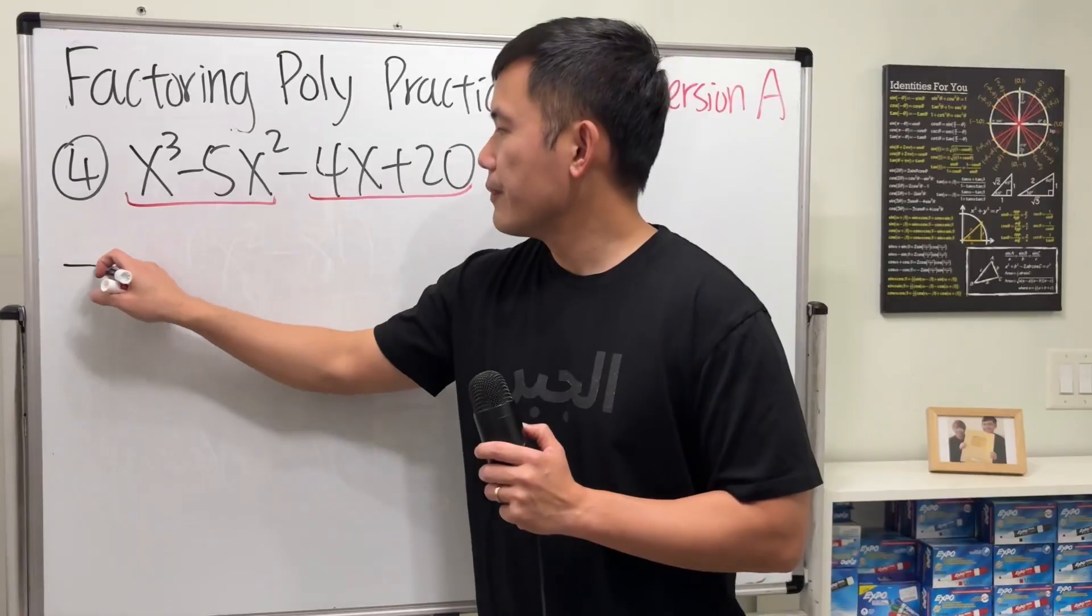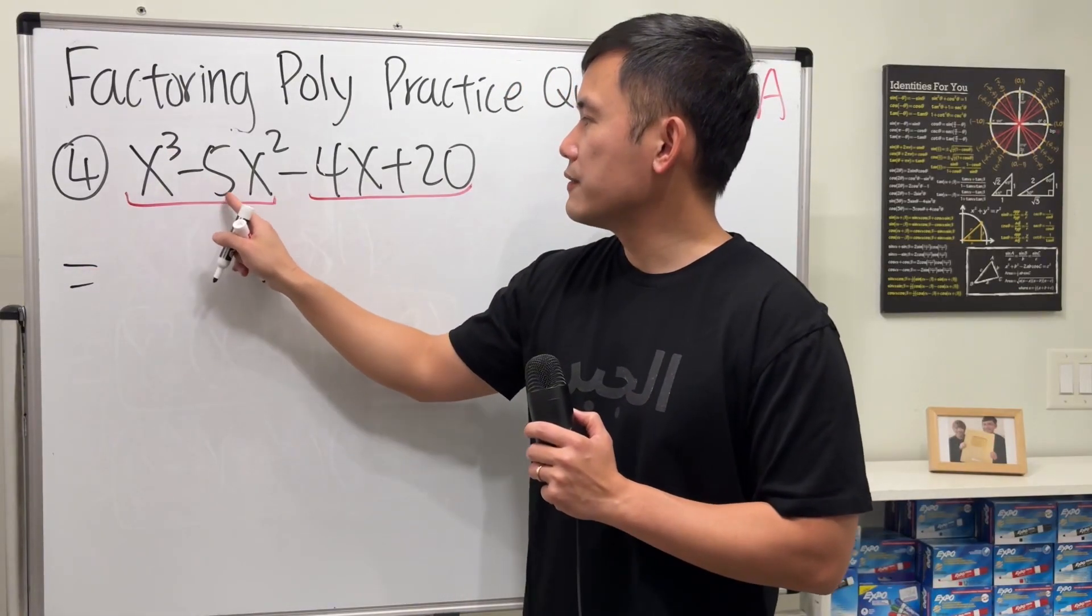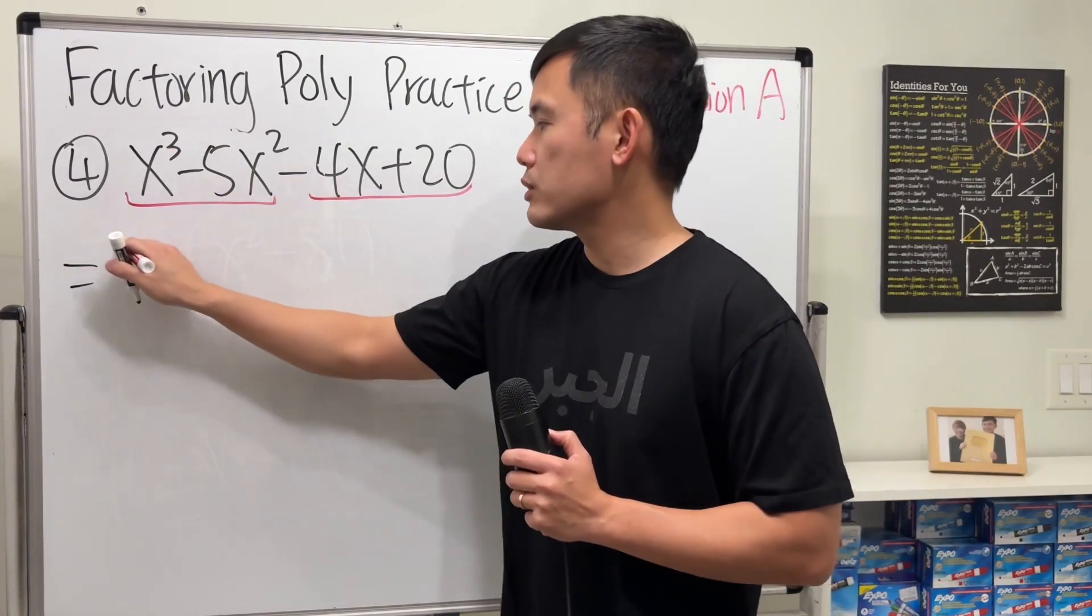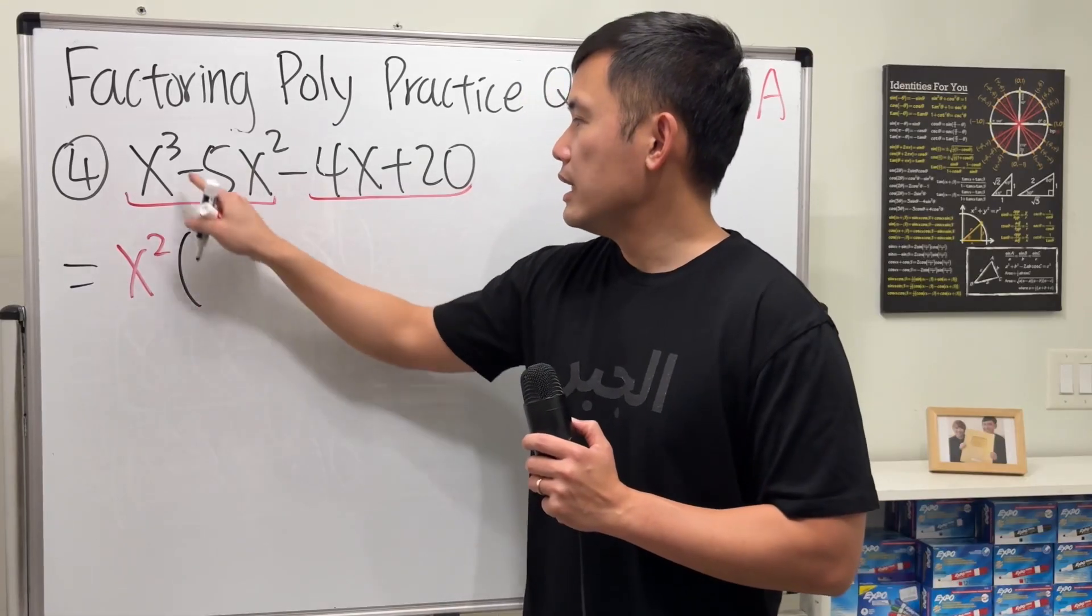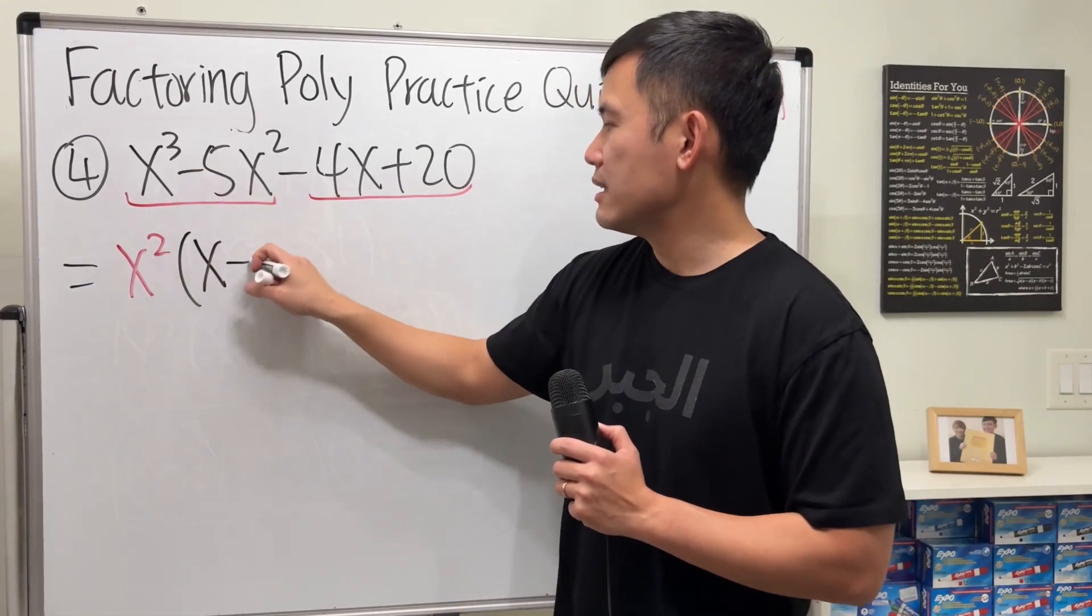So right here, x to the third minus 5x squared, we can take out x squared. And then we will get x minus 5.